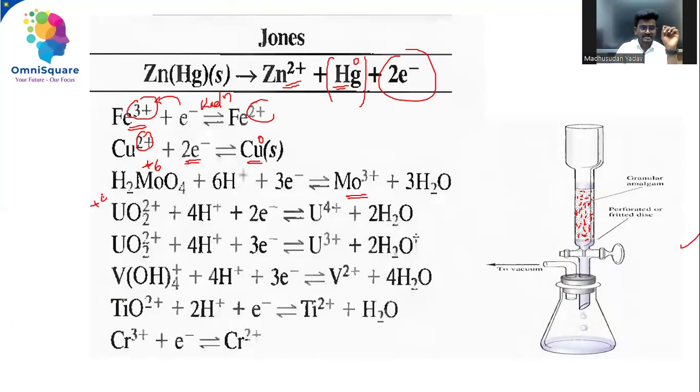Vanadium is in plus three oxidation state here, converted to vanadium plus two. Titanium is in plus four, converted to titanium plus two. Chromium plus three is converted to chromium plus two. So this is how Jones reductor will reduce higher oxidation state metal ions to their low oxidation state metal ions.